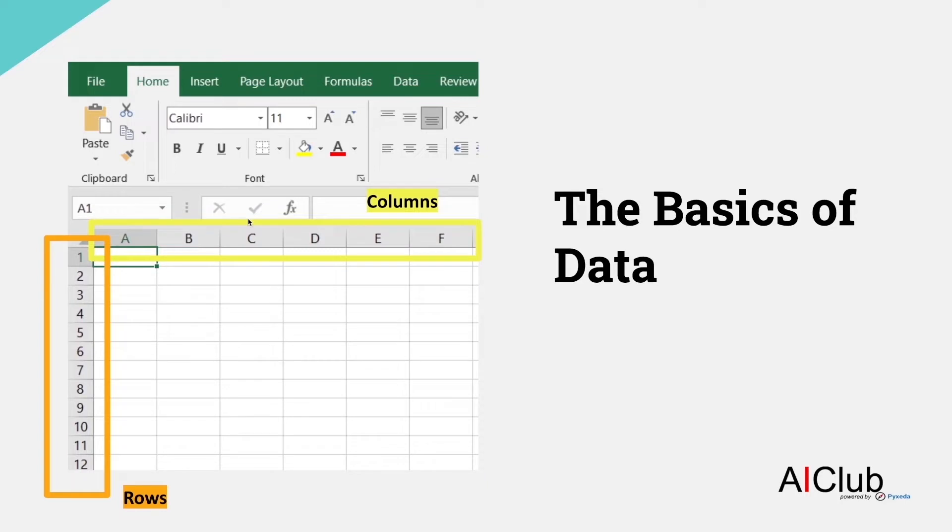Previously, we talked a little bit about how AIs need a lot of data to learn patterns from. In this video, we'll talk about how this data looks. Data can be in many forms. It can be numbers, images, videos, audio, etc. We will focus on data that can be stored in tables. You might have seen tables in softwares like Excel or Google Sheets.